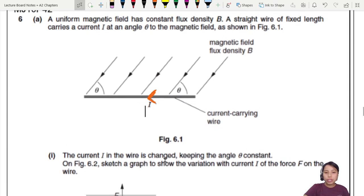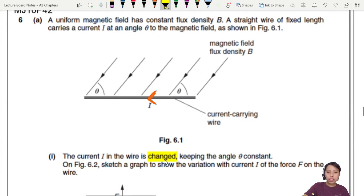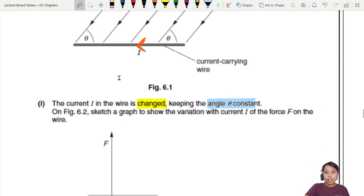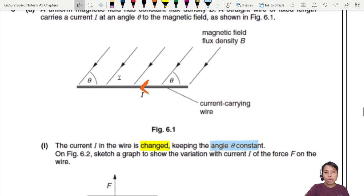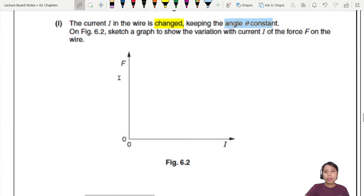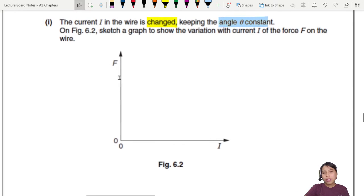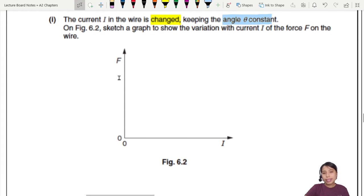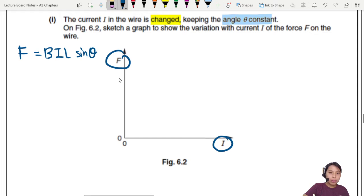So the current in the wire is changed, but the angle is constant. On the figure, sketch a graph to show the variation with current of force. Okay, have to draw a graph. Whenever you see a graph question, the first thing is do you know key points? Is there an equation to help you? Anything that has F and I in it? F = BIL, we just learned it. F = BIL sin θ.